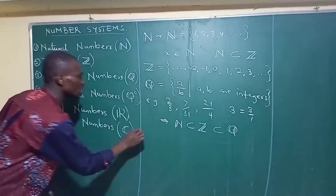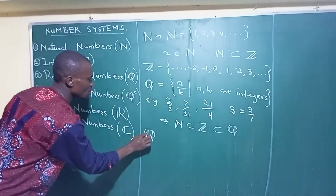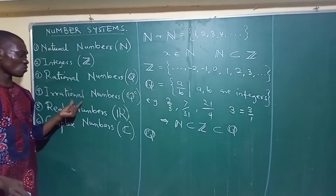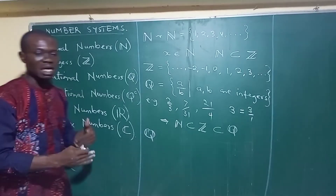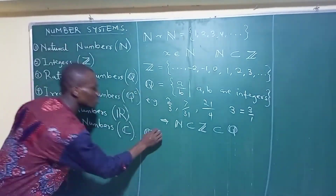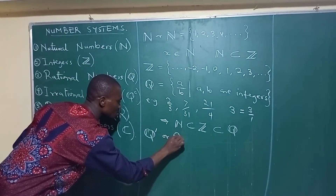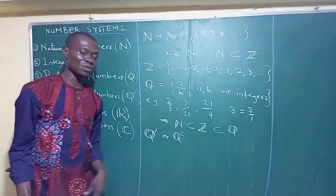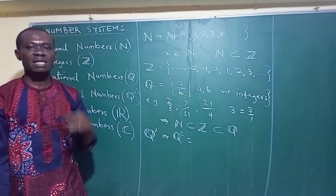The next one is what we call the irrational numbers. The symbol for irrational numbers is Q complement, meaning that irrational numbers are just the complement of the rational numbers — they are those numbers that cannot be represented as fractions. You can write it with a complement symbol, or write it as QC. Some people use the small C to represent the complement.